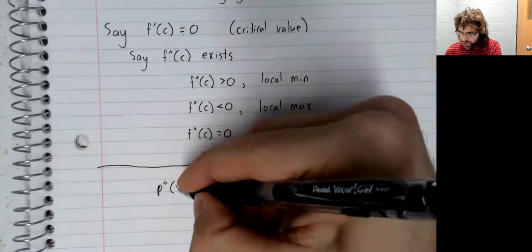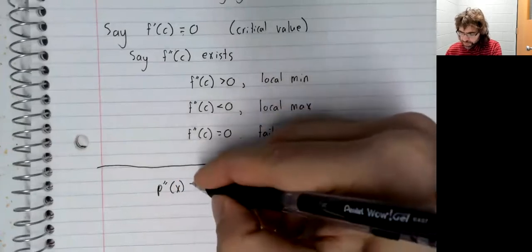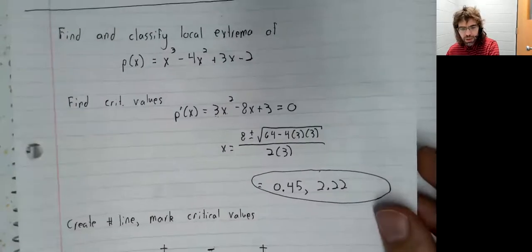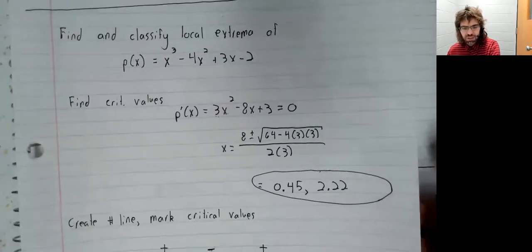The second derivative of 3x² - 8x + 3, we've got 6x - 8.